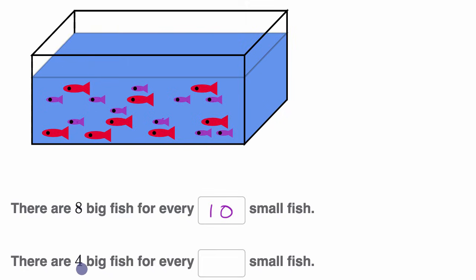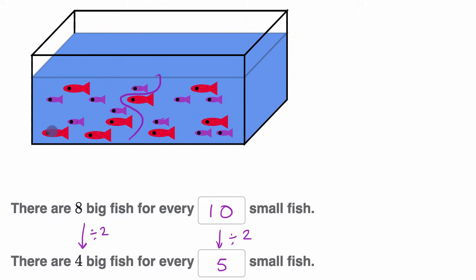It says there are four big fish for every blank small fish. Well, we have half as many big fish — we divided by two — so we're going to have half as many small fish, dividing by two as well. For every four big fish, there are five small fish. You can divide the fish evenly into two groups: one group has four big fish and five small fish, and the other group also has four big fish and five small fish. These are equivalent ratios.